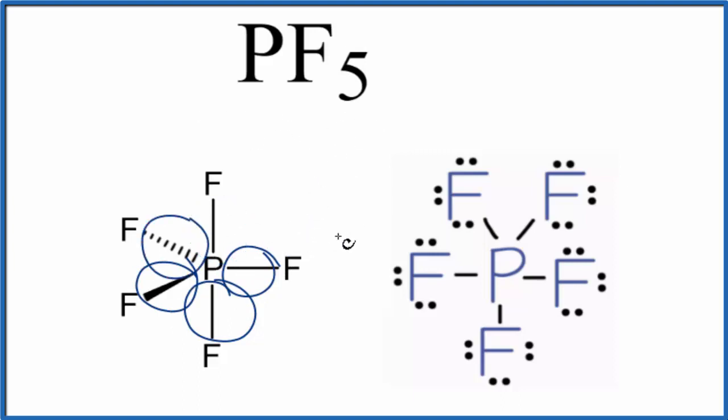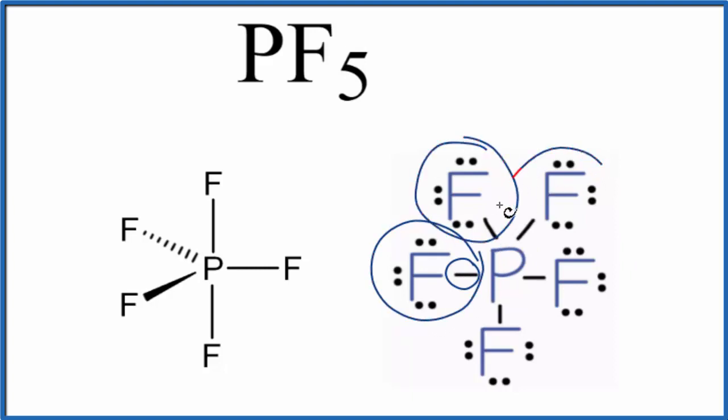So since PF5 is a covalent compound, these bonds here, they share the electrons. You can see over here in this representation as well, we have the lines, pair of electrons. And it shows us that these shared electrons allow each fluorine atom to have an octet, eight valence electrons.